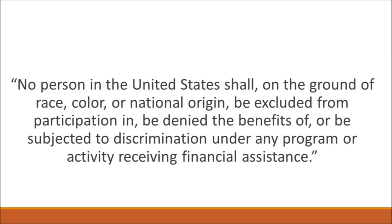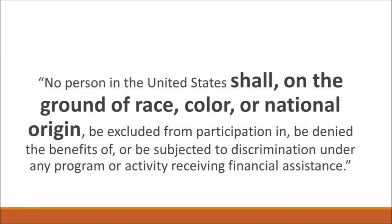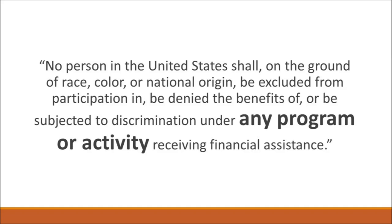To understand the depth of civil rights requirements in school nutrition programs, let's review the original legislation from Title VI of the Civil Rights Act of 1964. It states: 'No person in the United States shall, on the ground of race, color, or national origin, be excluded from participation in, be denied the benefits of, or be subjected to discrimination under any program or activity receiving financial assistance.' Race, color, or national origin includes any perceived race, color, or national origin. Program or activity means all the operations of state and local governments, educational institutions, corporations, and private institutions that receive federal financial assistance.